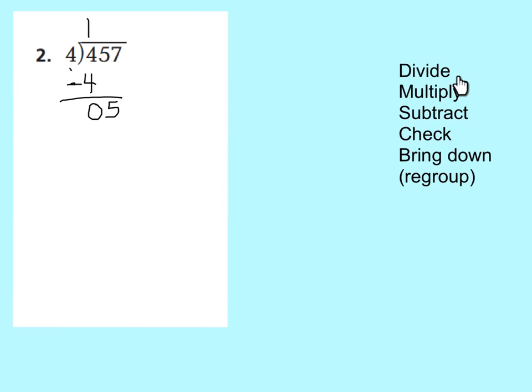Now I have 5 long pieces or 5 groups of 10 and I have 4 people to share them with, so I go back to step 1: divide. If I have 5 groups of 10 and share them with 4 people, each person can get 1 group of 10. I put 1 above my tens place. Next step: multiply — 1 times 4 is 4. Write 4 below your 5, then subtract: 5 minus 4 is 1 left. Check: is 1 less than 4? Yes, so there are no more tens to divide.